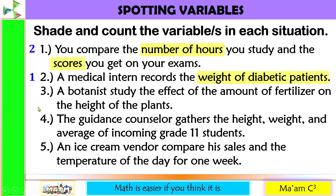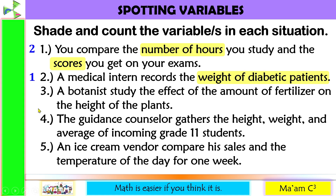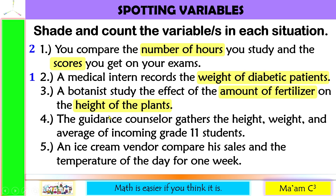Number three: a botanist studied the effect of the amount of fertilizer on the height of the plants. What could be the variables here? What can we measure? The amount of fertilizer as well as the height of the plants. We have two variables.